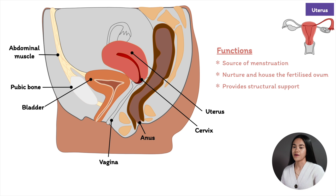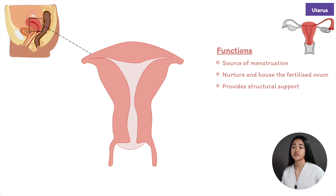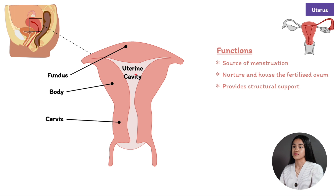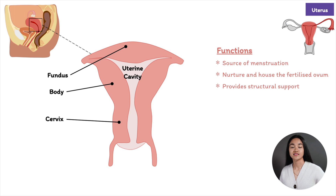Zooming in on the uterus, it has three parts: the fundus, which is the top of the uterus; the body, where implantation usually occurs and which contains the uterine cavity; and the cervix, the lower part that connects with the vagina.